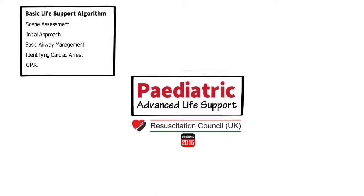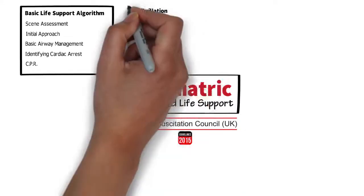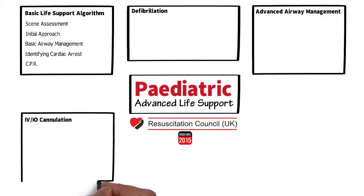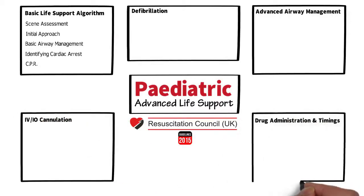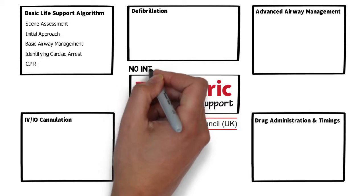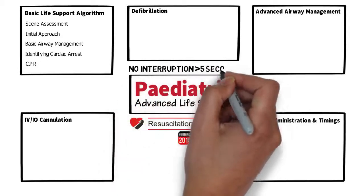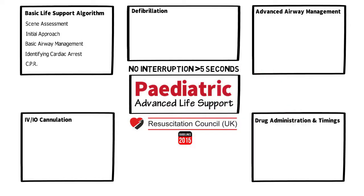The main categories for ALS are defibrillation, advanced airway management, IV or IO cannulation, and drug administration and timings. Many of these skills will necessitate some interruption of CPR, so it's important to highlight a key principle: according to Resuscitation Council guidelines, at any point during resuscitation CPR should be interrupted for no longer than five seconds.